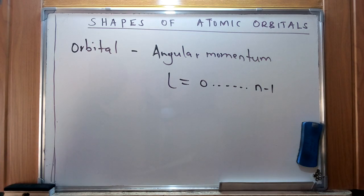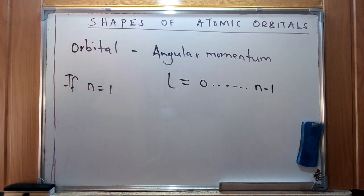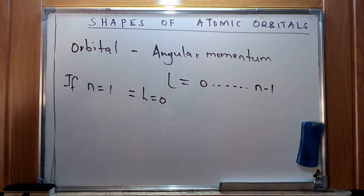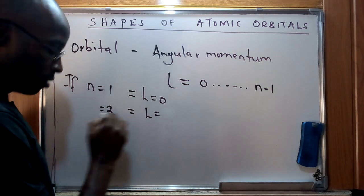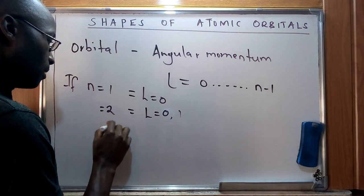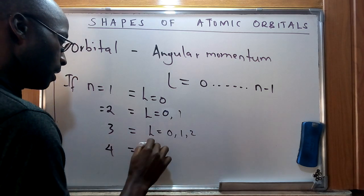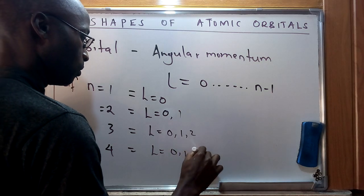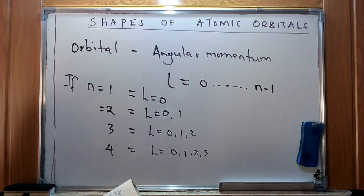From the principal quantum number, we listed the values of l: if n equals one, then l equals zero. If n equals two, then l equals zero or one. For n equals three, l equals zero, one, or two. For n equals four, l equals zero, one, two, or three.